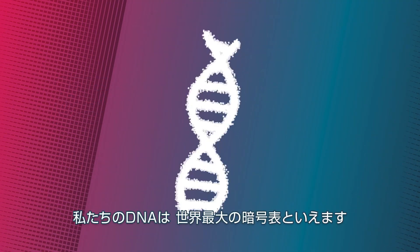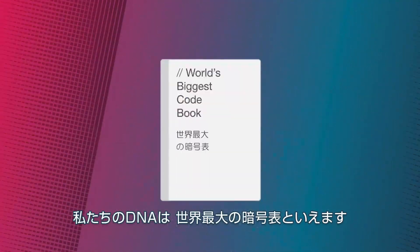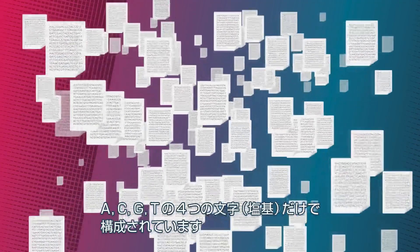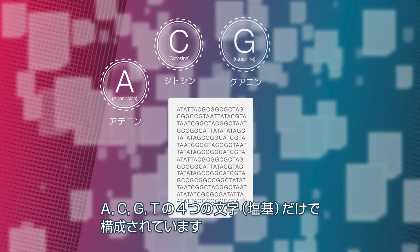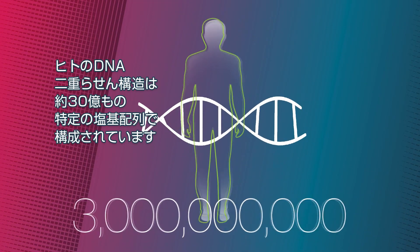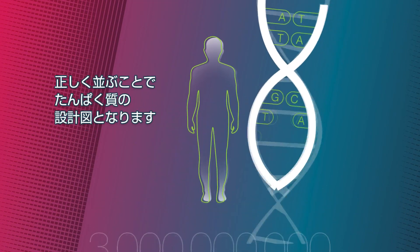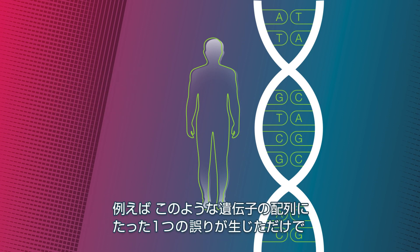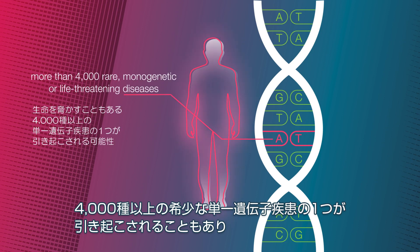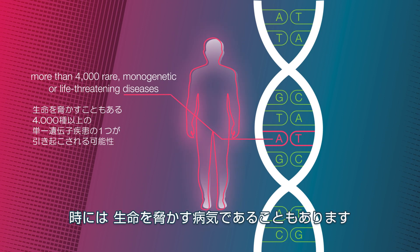Our DNA is comparable to the world's biggest codebook, containing words made up of only four basic letters: A, C, G and T. The DNA double helix in humans consists of three billion specific arrangements of these letters. Arranged correctly, they provide the building instructions for proteins. If just a single typo creeps in here, this can be the cause of one of more than 4,000 rare monogenic and sometimes life-threatening diseases.